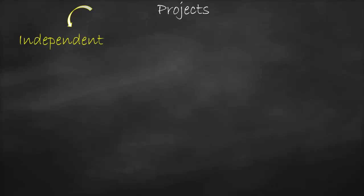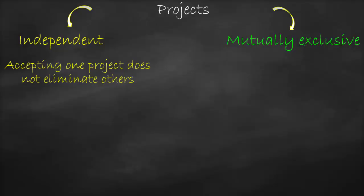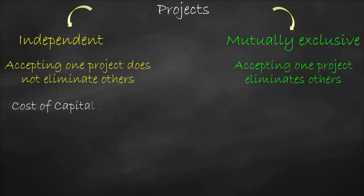When we talk about projects, we have two types: independent projects or mutually exclusive projects. Independent projects mean that accepting one project does not eliminate the others — you can do all projects as long as they are feasible and profitable. Mutually exclusive means that if you accept one project, you must reject the other.